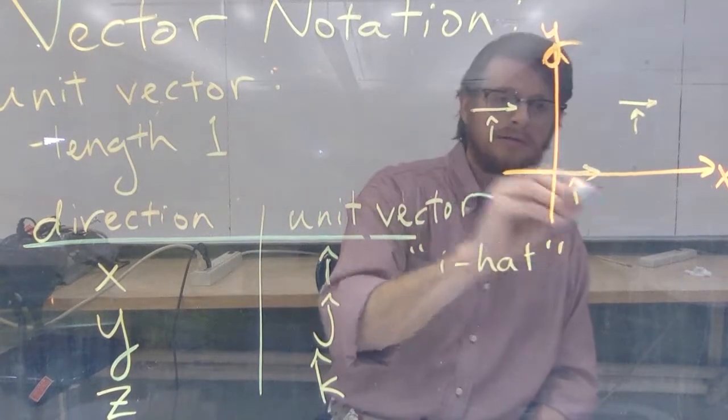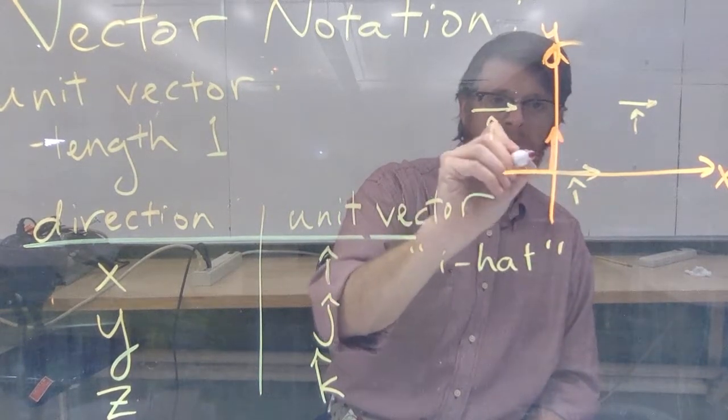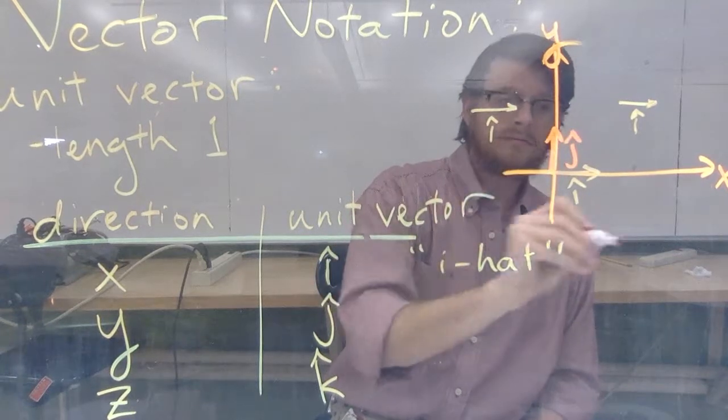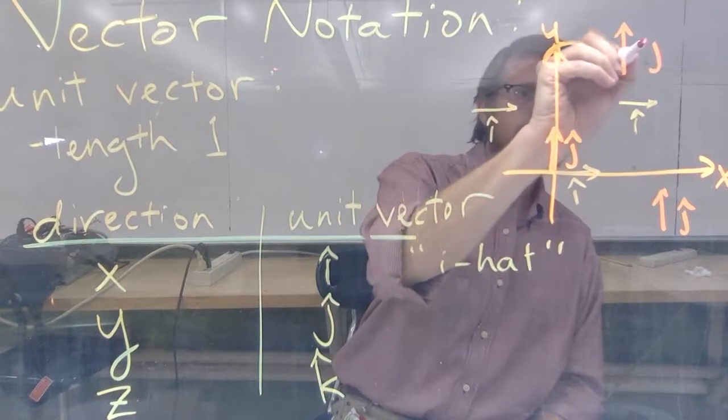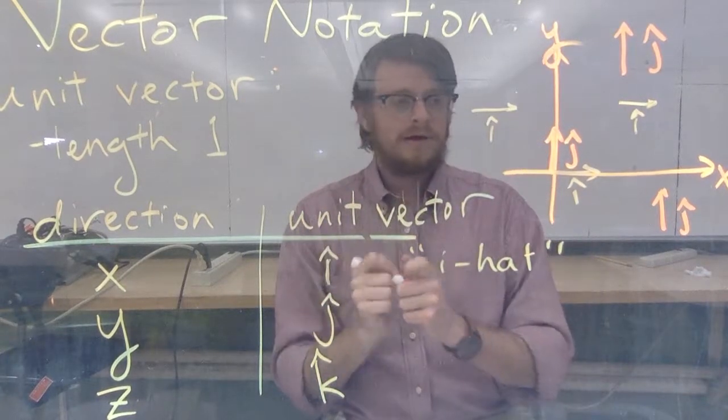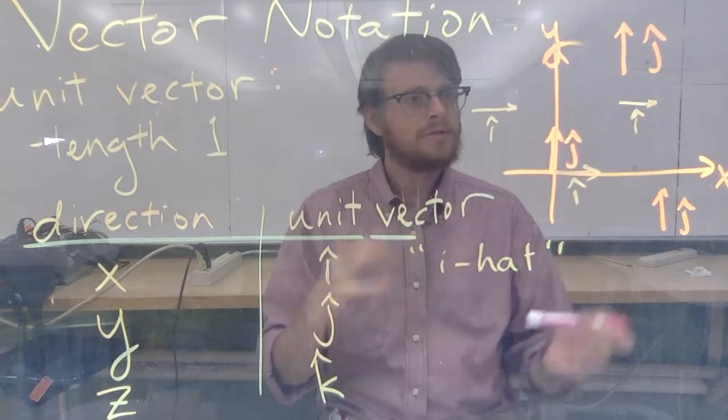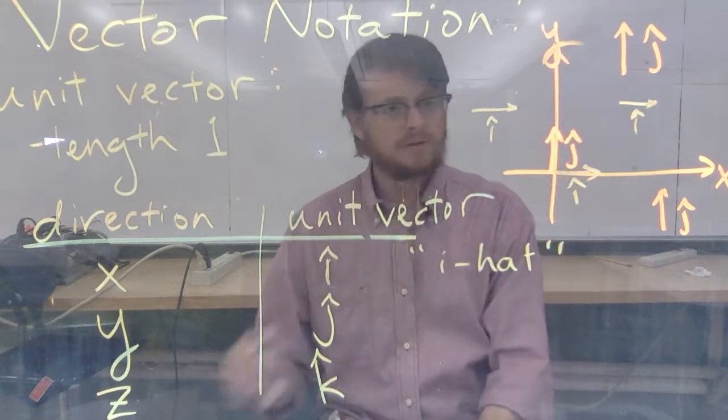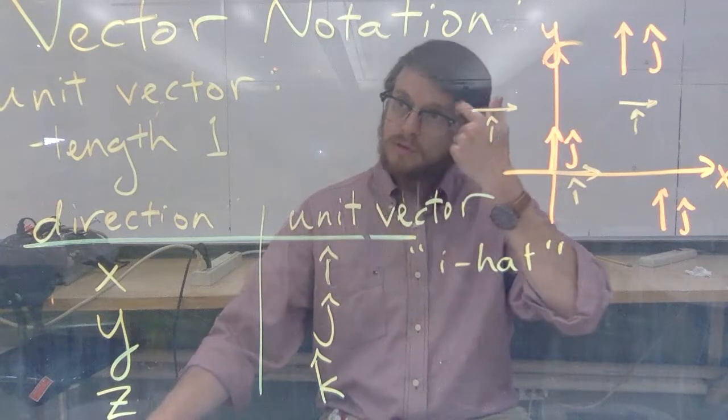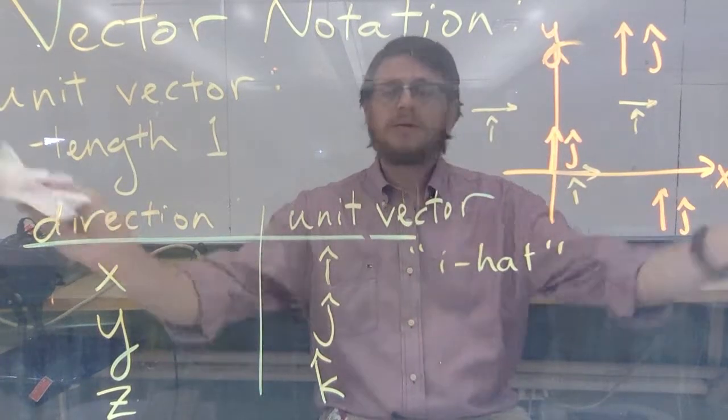And similarly, we could draw j-hat here, but we could also draw it here. Anywhere you want in the coordinate plane, as long as it points straight up, that's j-hat. And k-hat would point into or out of the plane of the board, so I won't draw it here. So that's really it. That's the notation.